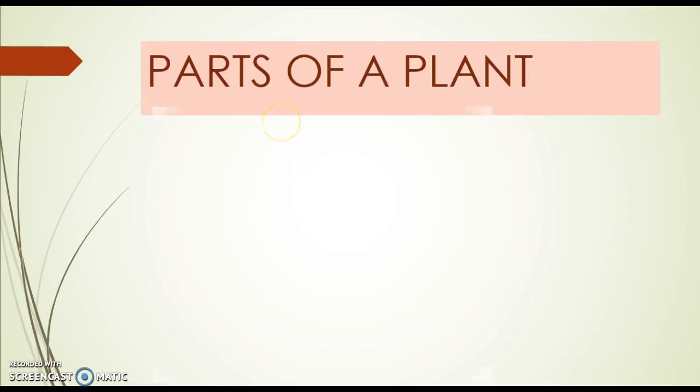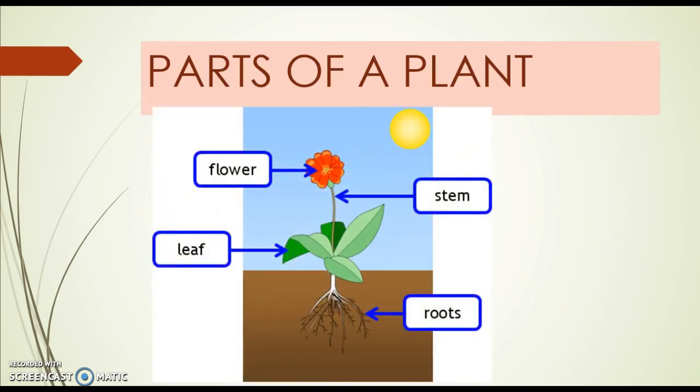So here we are. Look at the parts of a plant. Can you see at the picture? So you have the flower, the stem, the leaves, and the roots.